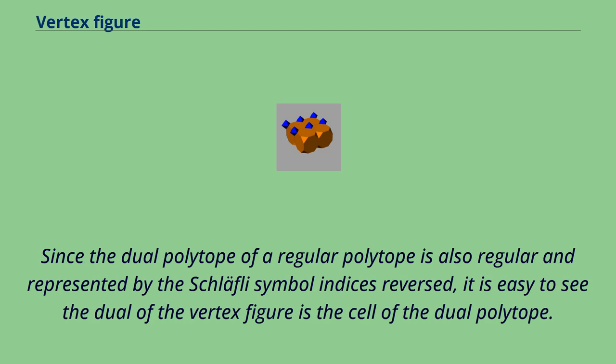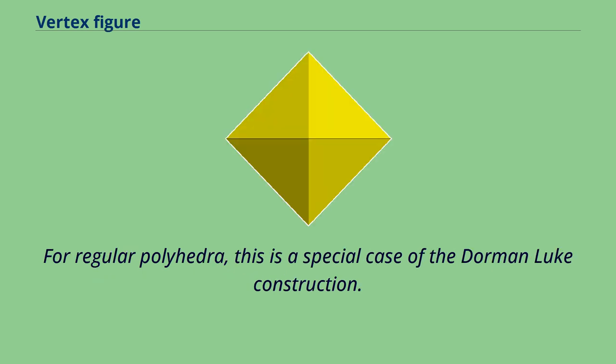Since the dual polytope of a regular polytope is also regular and represented by the Schläfli symbol indices reversed, it is easy to see the dual of the vertex figure is the cell of the dual polytope. For regular polyhedra, this is a special case of the Dorman-Luke construction.